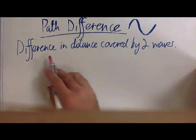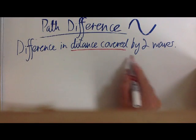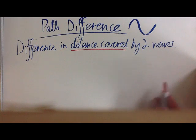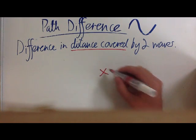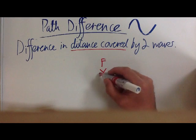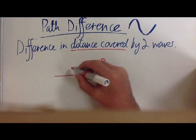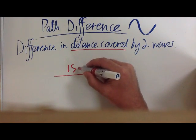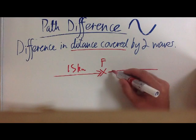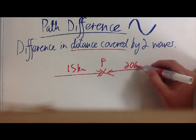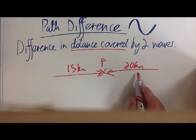Path difference is simply the difference in distance covered by two waves. It's like two people racing to the finish line—one person has traveled 15 kilometers and another has traveled 20 kilometers. The path difference, the difference in distance covered, is 5 kilometers.